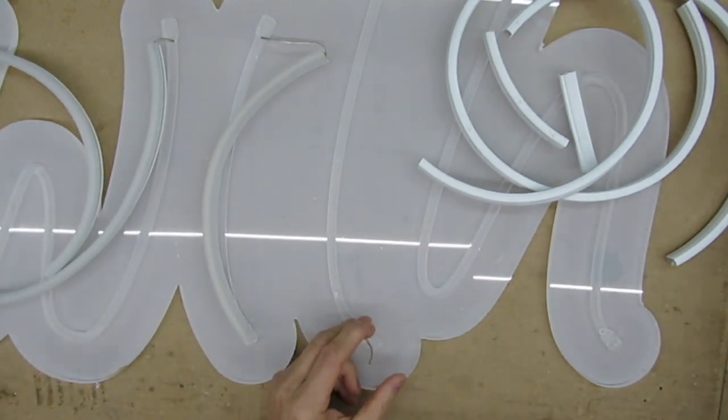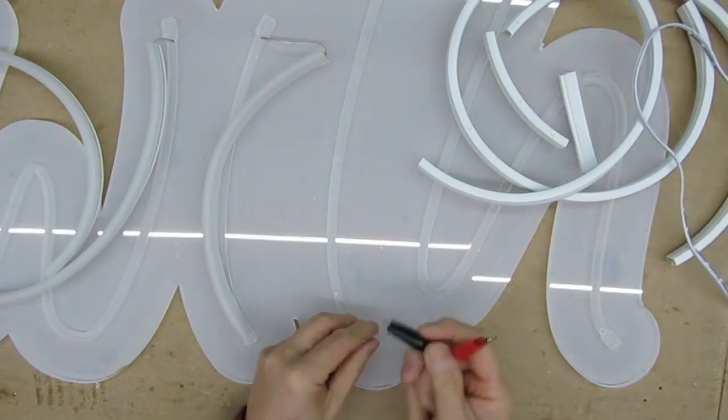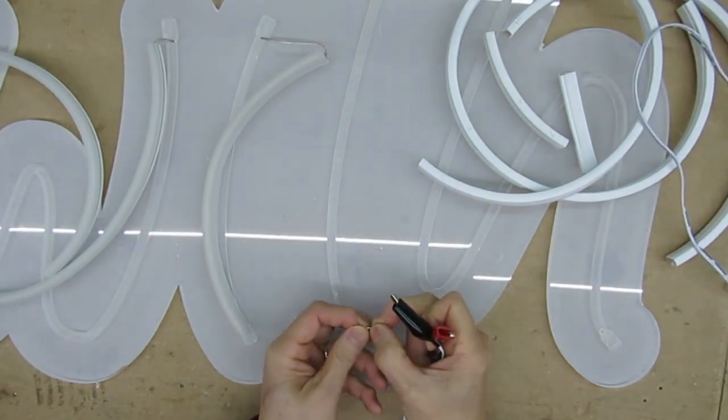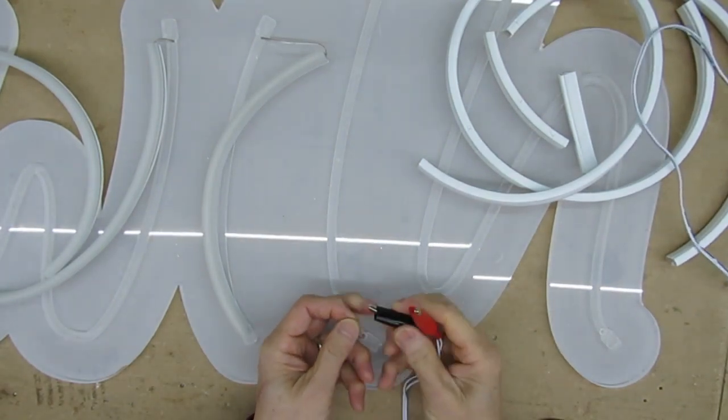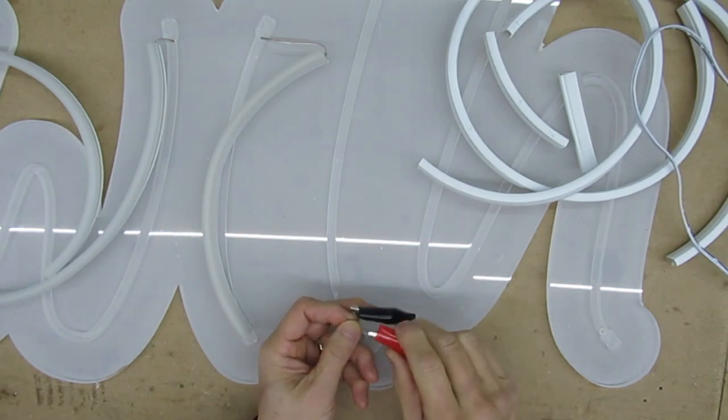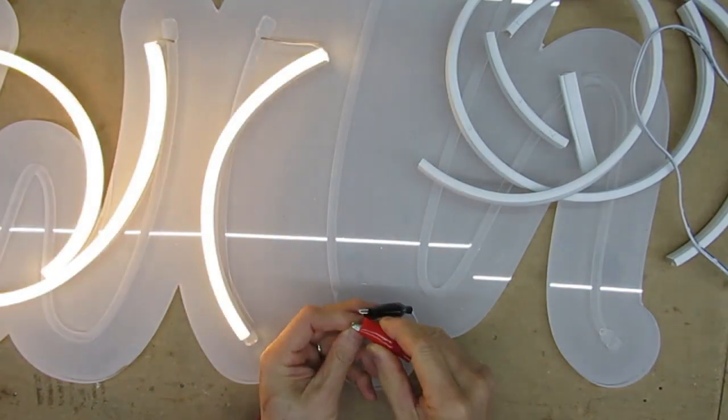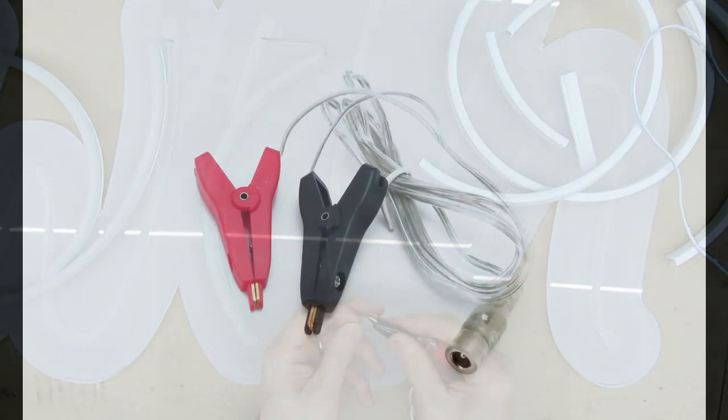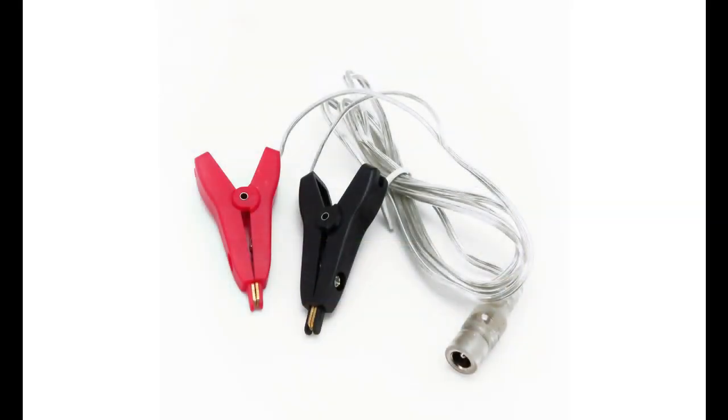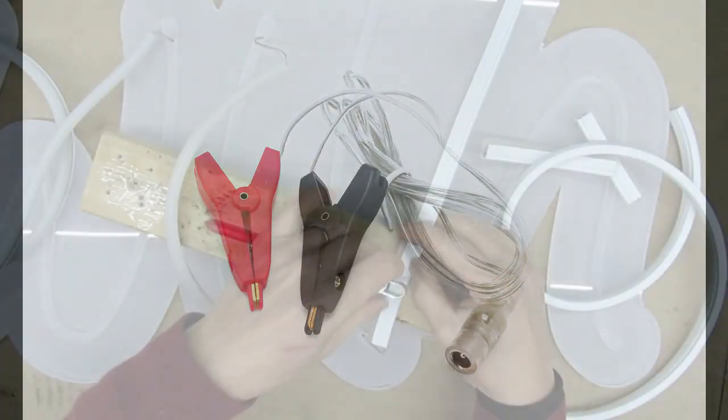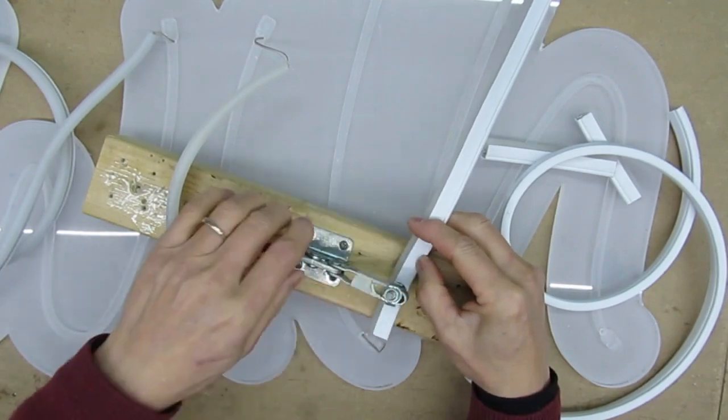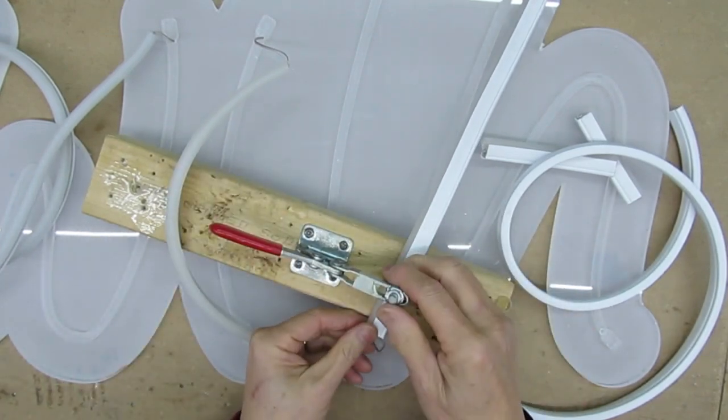Before you solder the cable to the next piece, it is good practice to test it and make sure it illuminates before you carry on. Testing clips are available to purchase on our website. Continue soldering all the pieces together, testing each section as you go.